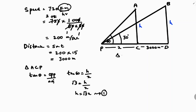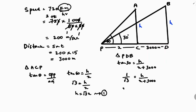Now using triangle BDP, tan 30 equals opposite over adjacent. The opposite is h, and the adjacent for the 30-degree angle is x plus 3000. So tan 30, which is 1/√3, equals h divided by (x + 3000). Cross-multiplying gives x + 3000 = h·√3. This is equation 2.